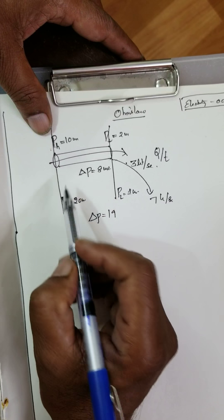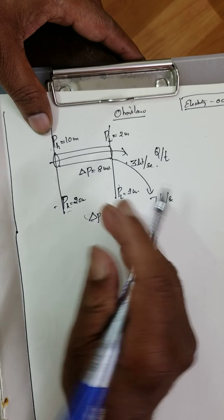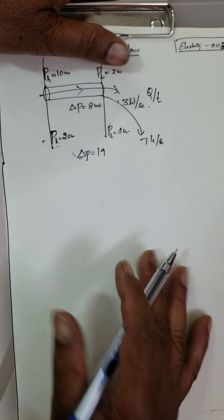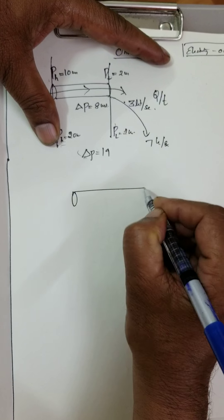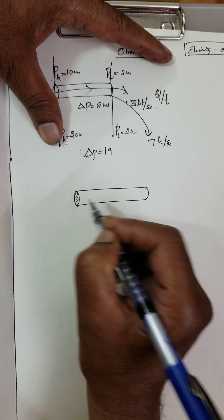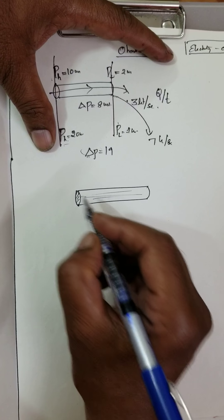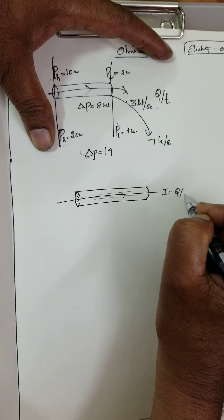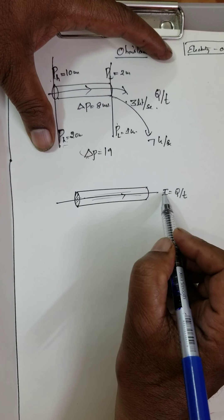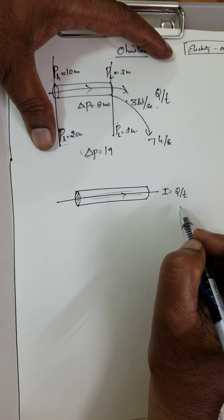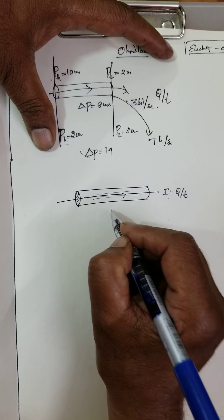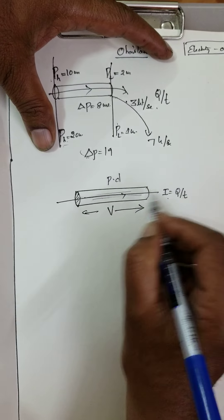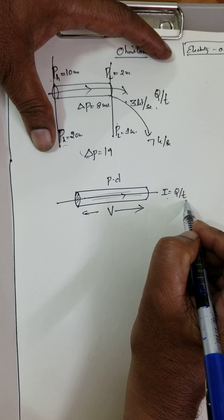The quantity of water that comes out per second depends upon the pressure difference. Same like this hydrodynamics analogy, we are going to apply to a conductor — a metallic conductor. In a metallic conductor, steady current flows. Current is the quantity of charge that flows per second. Steady current is due to the pressure difference or potential difference. When potential difference is more, more quantity of charge comes out per second.